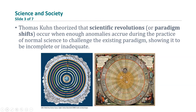Thomas Kuhn theorizes that scientific revolutions, also called paradigm shifts, occur when enough anomalies accrue during the practice of normal science to challenge the existing paradigm. In other words, scientists might discover some outcome that seems like a fluke — a result that is unexpected. When the unexpected outcome can be replicated, it makes scientists question whether it was really a fluke or if they just learned something new. Keep in mind that such scientific revolutions are infrequent. When they do occur, they turn existing ways of thinking about science on their heads.